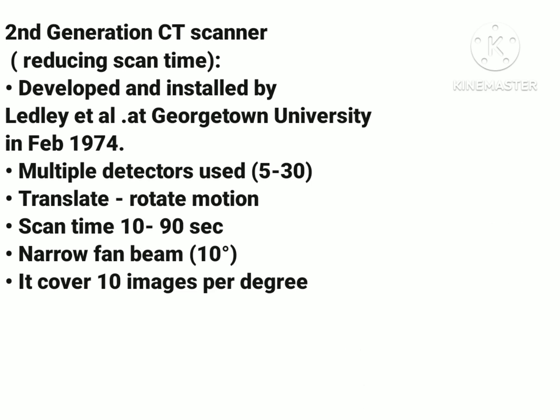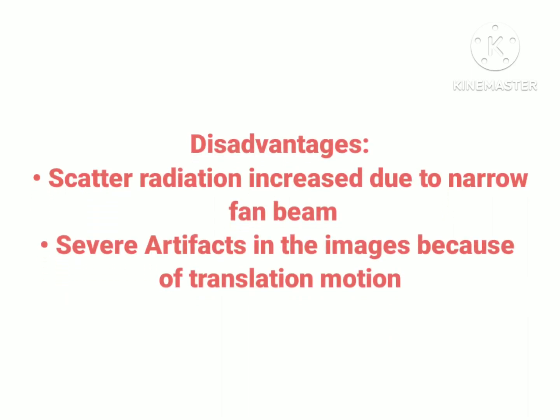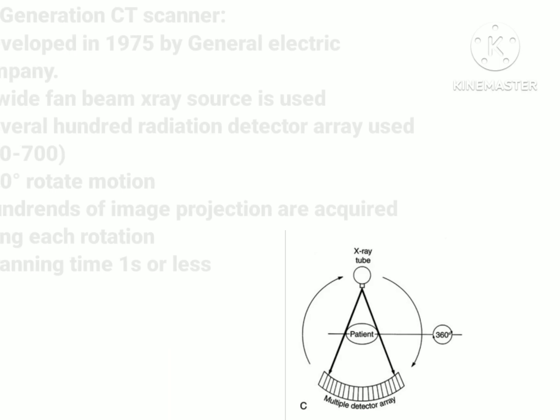Disadvantages of the second generation CT scanner: firstly, scatter radiation increased due to the narrow fan beam. Next, there were severe artifacts seen in the image because the translation and rotation needed to be performed quickly and precisely while moving heavy X-ray tubes and associated gantries and electronics. Even a small variation or deviation of the scanner hardware position related to the reconstruction matrix or voxels would cause data to be back-projected to the wrong voxels, creating severe artifacts. This indicated the need to eliminate the translation motion.